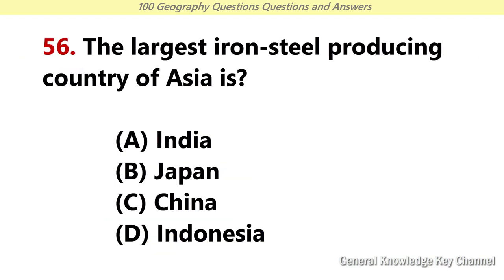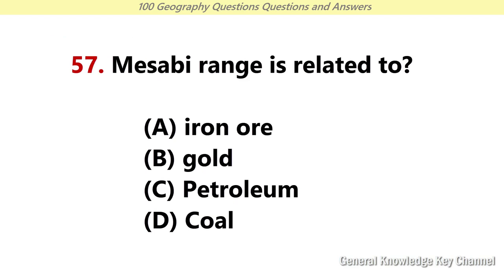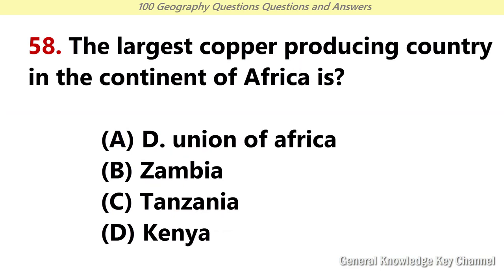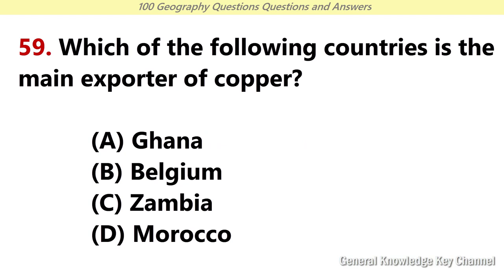The largest iron and steel producing country of Asia is? Answer C: China. The largest copper producing country in the continent of Africa is? Answer B: Zambia. Which of the following countries is the main exporter of copper? Answer C: Zambia.